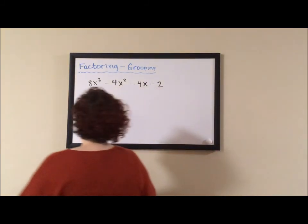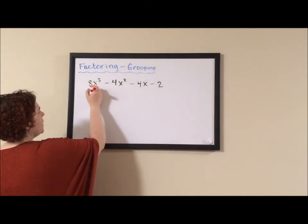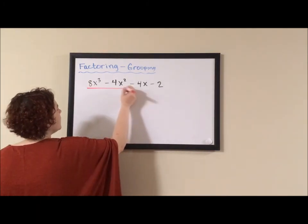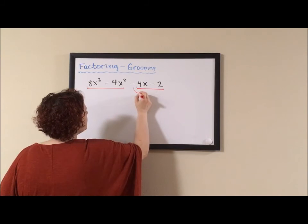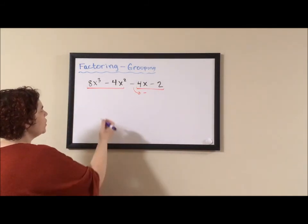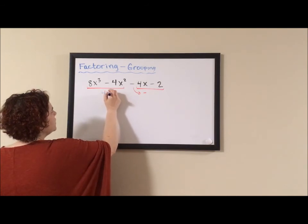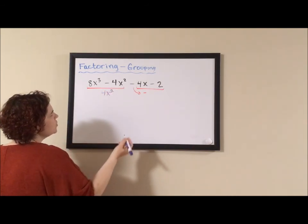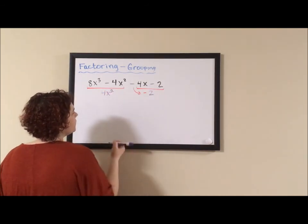So if we jump right in and we group by grouping our first two terms together and our second two terms together and bringing down this negative, we see that out of the first two terms we can pull a 4x squared and out of the second two terms we can pull a negative 2.